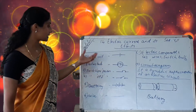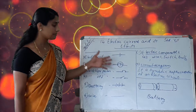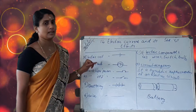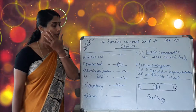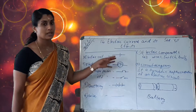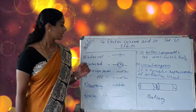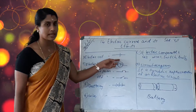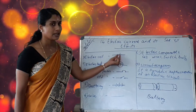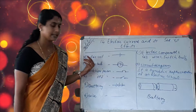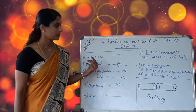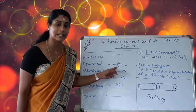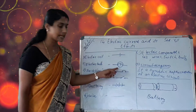First we study about some symbols used in electric circuits. An electric cell has a specific symbol we can use in a circuit diagram. Then the electric bulb also has its own symbol.